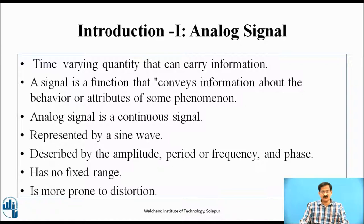Introduction Part 1 — Analog Signal. An analog signal is a time-varying quantity that can carry information. A signal is a function that conveys information about the behavior or attributes of some phenomena. An analog signal is a continuous signal represented by a sine wave, described by amplitude, period or frequency, and phase. It has no fixed range.